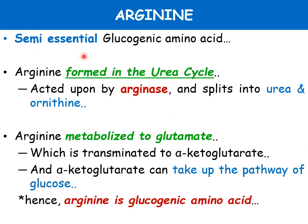Arginine is considered a semi-essential amino acid and is glucogenic by metabolism. Arginine is formed in the urea cycle and is acted upon by the arginase enzyme, present only in the liver, which splits arginine into urea and ornithine. Arginine is then metabolized to glutamate, which is transaminated to alpha-ketoglutaric acid. This alpha-ketoglutaric acid enters the TCA cycle as an intermediate, ultimately forming glucose — hence arginine is a glucogenic amino acid.